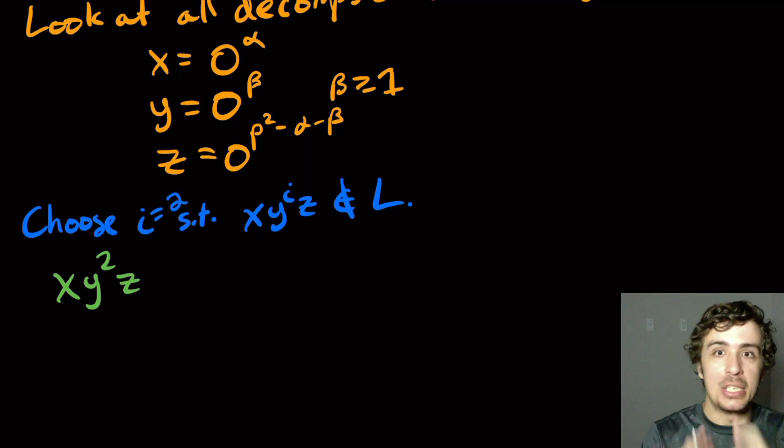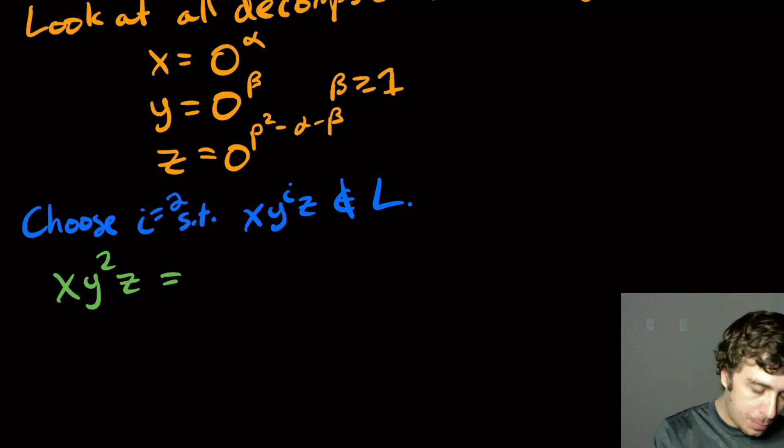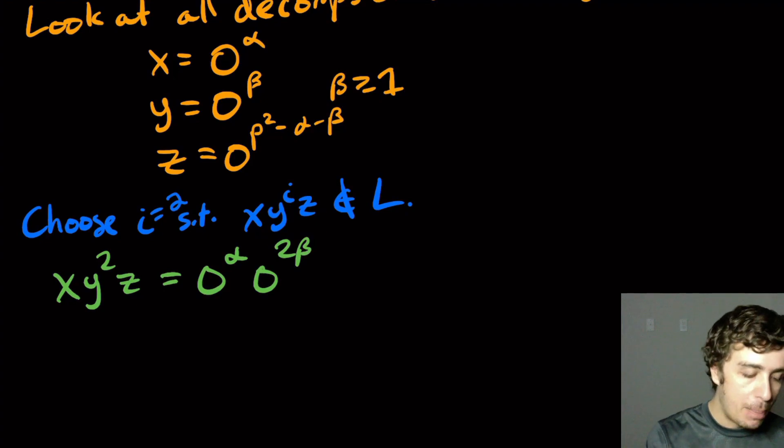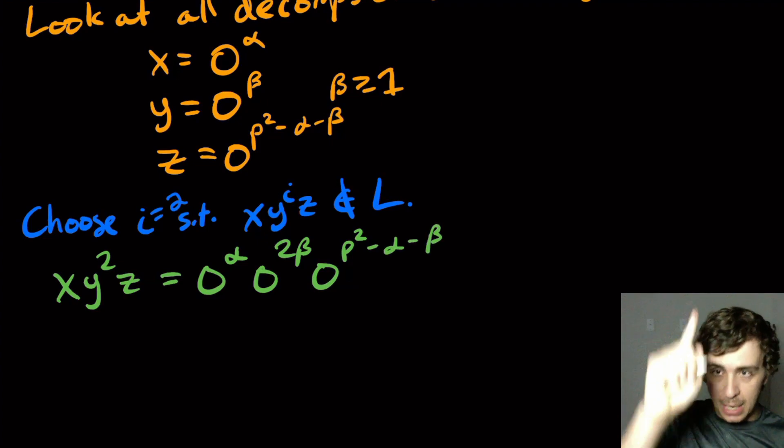We don't know that it actually is not in the language yet, but we need to show it. So let's just copy down the pieces. So zero to the alpha, zero to the two beta, because I have two copies of y here, and then the z part, which is just copied straight down from the decomposition upstairs.